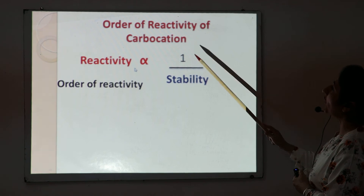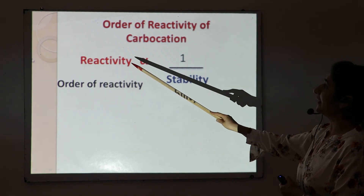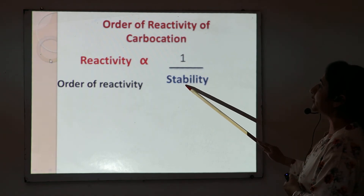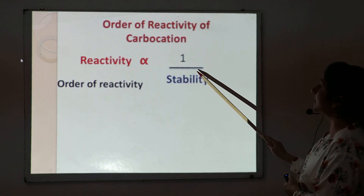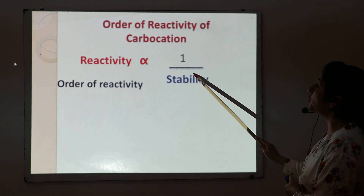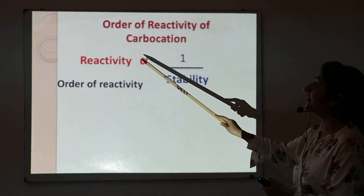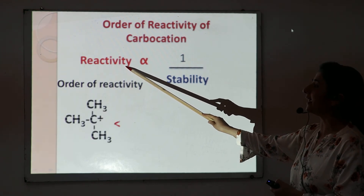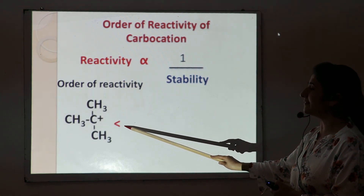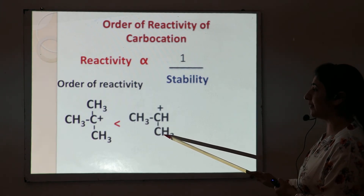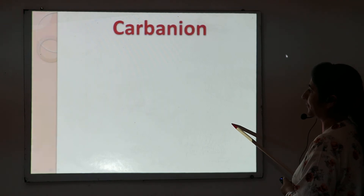The order of reactivity of carbocations: reactivity is inversely proportional to stability. Since tertiary carbocation is more stable than secondary and primary, the reactivity order is: tertiary carbocation is less reactive than secondary carbocation, which is less reactive than primary carbocation.